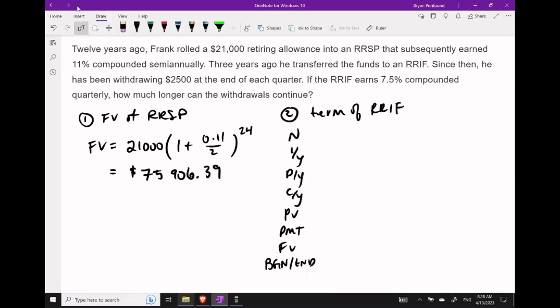Next, let's determine the term of the RRIF. He's been withdrawing payments of $2,500, and the future value will eventually dwindle to zero. We'll insert the value from part one as our present value, but enter it as negative since we need to buy this annuity. The interest rate is 7.5% compounded quarterly, and payments happen at the end of every quarter. Our goal is to solve for n.